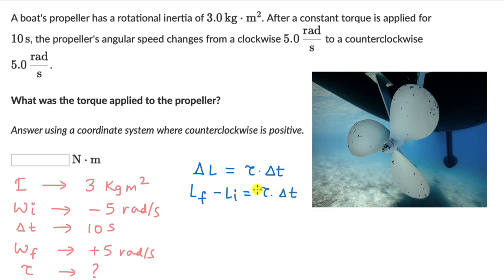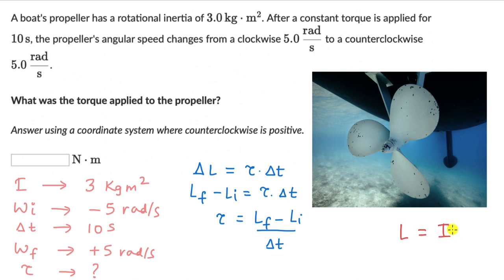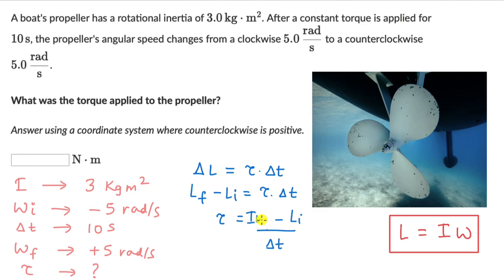We need to figure out what torque is, so rearranging: τ = (Lf - Li) / Δt. We know Δt, and we can find the angular momenta using L = I·ω. So Lf = I·ωf and Li = I·ωi.